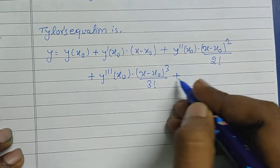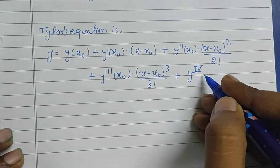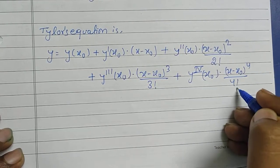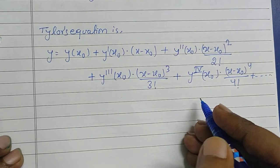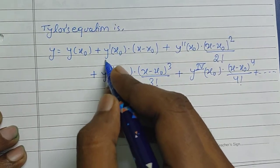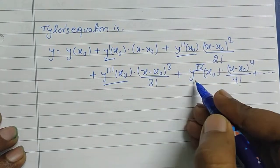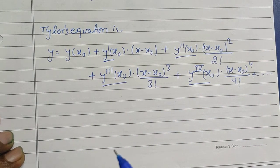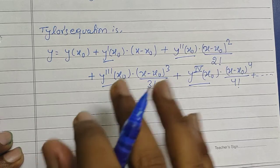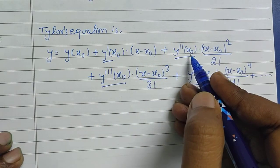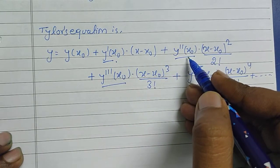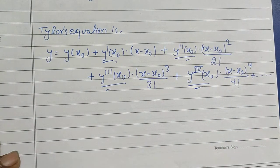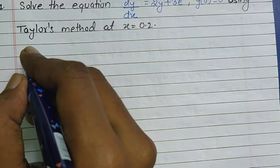We have to take up to the fourth power term. As you can see, we have the first order, second order, third order, and fourth order derivative. So while beginning the solution, the first thing we will do is find the second, third, and fourth order derivatives of the given equation, then we will arrive at the solution.